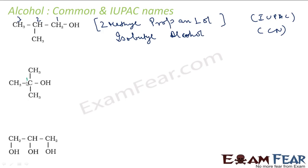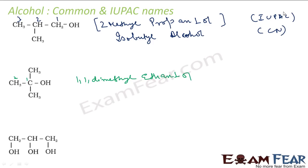Let's see this next compound. The longest chain is only 2 carbons — 1, 2 — that is the maximum I can get from the main chain. With 1,1-dimethyl substitution on ethanol, we get 2-methylpropan-2-ol as the IUPAC name. The common name is tert-butyl alcohol, because this is a tertiary carbon bearing the OH.